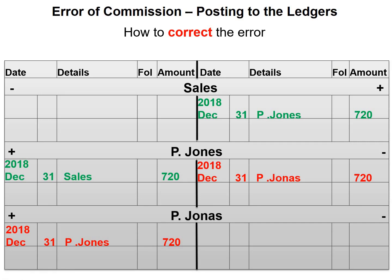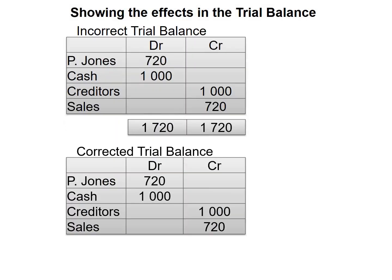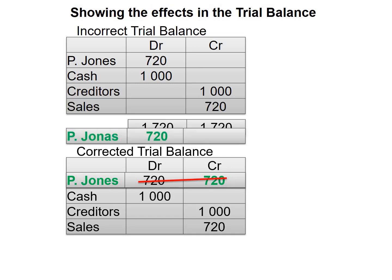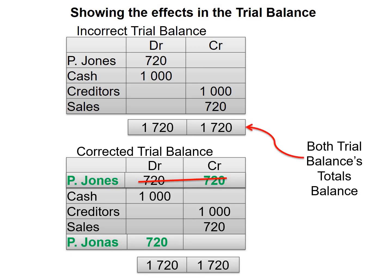Let's now take a look at the effect on our trial balance. On our incorrect trial balance, it shows a debit balance of 720 on the debit side for P. Jones, which is incorrect — it should be for P. Jonas. But our trial balance still balances. On our corrected trial balance, we credit P. Jones's account with 720, which brings the account of P. Jones to zero, and then we debit the account of P. Jonas with 720. At the end, our trial balance still balances. So both the incorrect trial balance and the corrected trial balance still balance — this is what we need to pay attention to when dealing with errors that do not affect the trial balance.